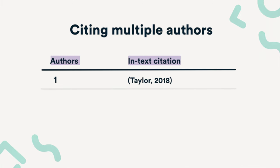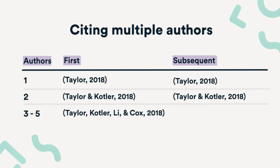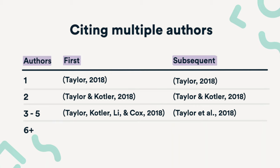When your citation contains multiple authors, it can be quite confusing. If your source has two authors, you use an ampersand between them, followed by the year — so here, it's Taylor & Kotler, 2018. If your source has three to five authors, then for the first citation, you list out all the authors and only use the ampersand for the final one. From the second citation onwards, you only need the first author name, followed by et al., which means 'and others.' And if a source has six or more authors, use et al. right from the first citation.